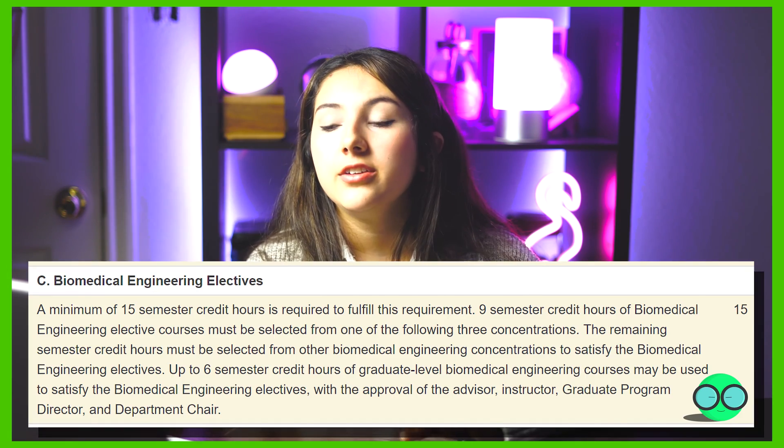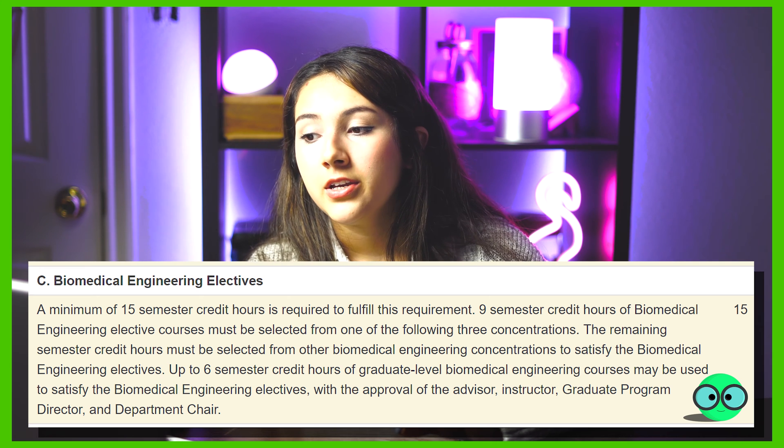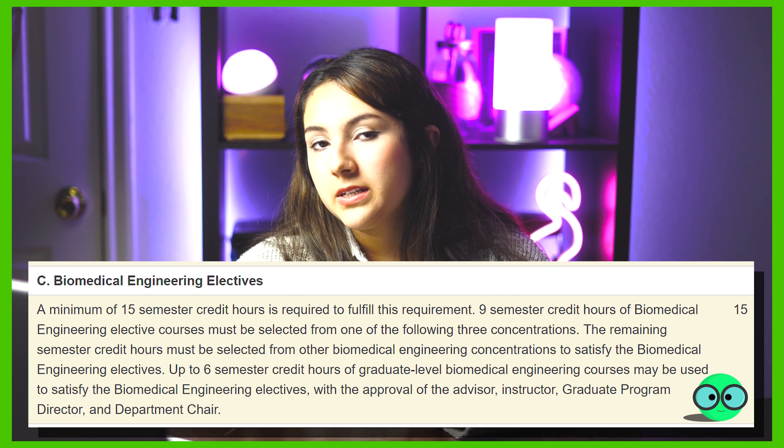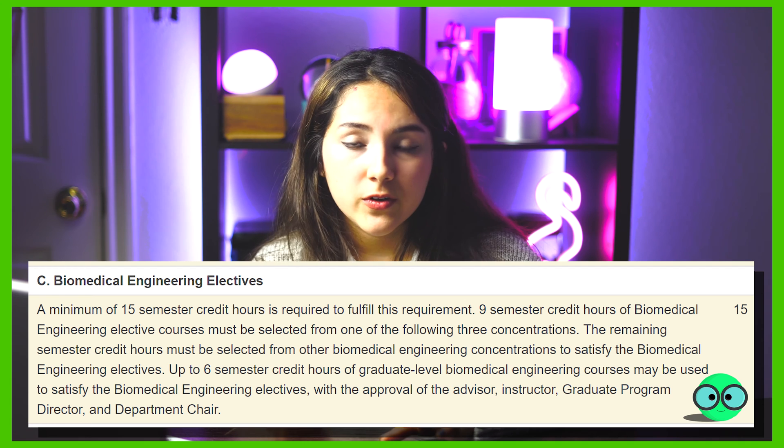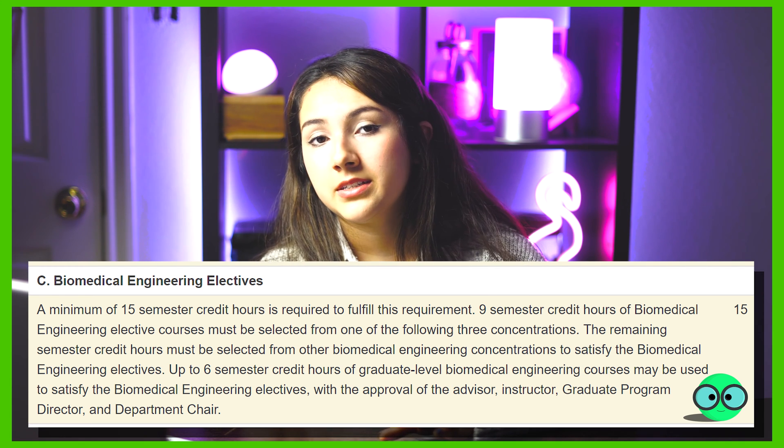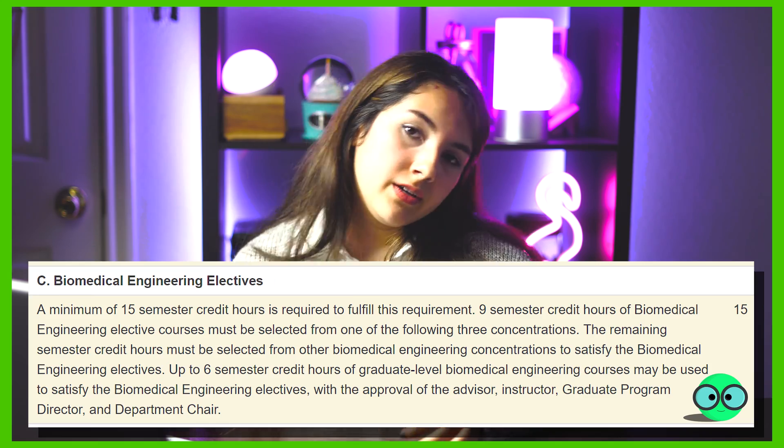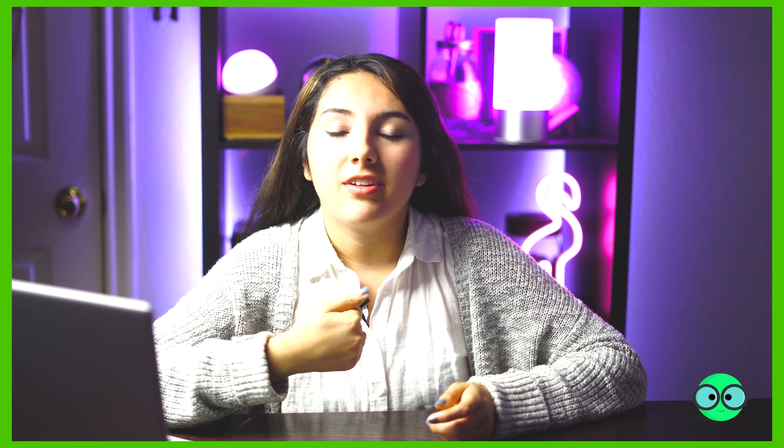Going back to the courses you need to take — you get BME electives that depend on your concentration. You need 15 credit hours from your BME electives. Nine of these have to be from your concentration and the other six from a different concentration. For example, I'm going to take nine credits from my biomaterials and cell engineering concentration, but I also need to take six from either imaging or biomechanics — that's kind of like your minor concentration.